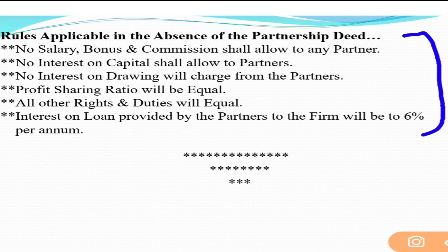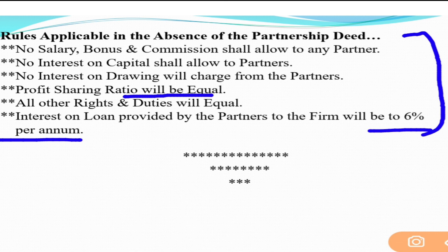No interest on capital shall be allowed to any partner. No interest on drawings will be charged from the partner — if a partner has withdrawn any amount from the firm, no interest will be charged on those drawings. Profit sharing ratio will be equal — regardless of how much capital was invested or how much work was done, profits are divided equally. All other rights and duties will also be equal for every partner. If a partner gives a loan to the firm, they will receive 6% per annum interest only, regardless of the market rate — the firm will pay only 6% annual interest.